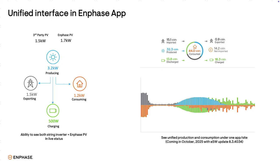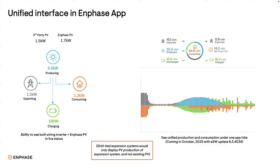Homeowners with Enphase expansion systems will have a unified interface in the Enphase app, which displays combined solar production of the existing PV and the expansion PV system. The exception would be for grid-tied systems, since the consumption and existing PV are measured by parallel CTs — the IQ Combiner 6C can't monitor the existing PV.